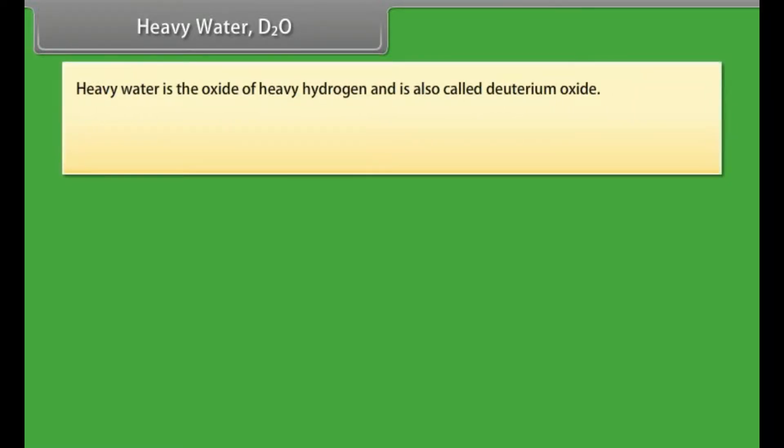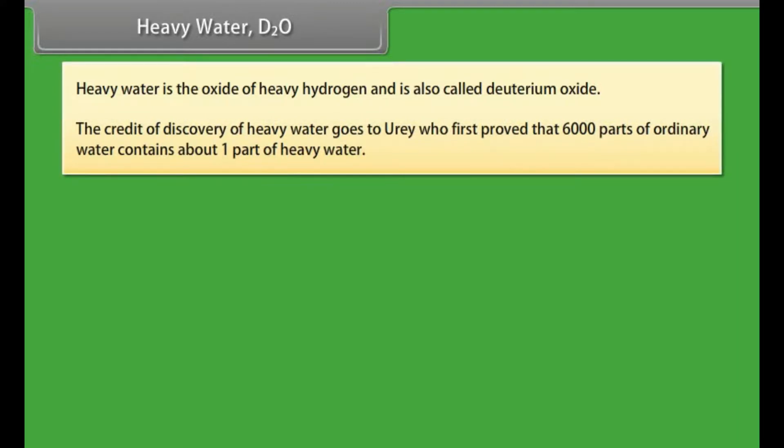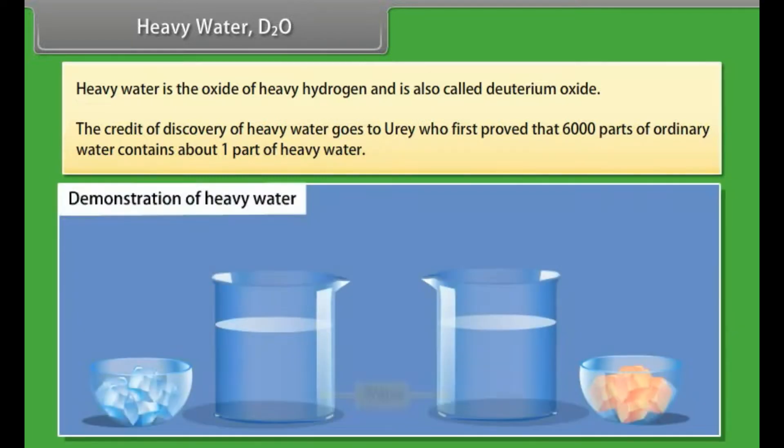Heavy water is the oxide of heavy hydrogen and is also called deuterium oxide. The credit of discovery of heavy water goes to Yurei who first proved that 6000 parts of ordinary water contains about one part of heavy water. In a demonstration, an ice cube floats on water, but an ice cube of heavy water D2O sinks. This is because deuterium is a heavier isotope than hydrogen and it changes physical and chemical properties of water.